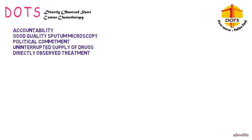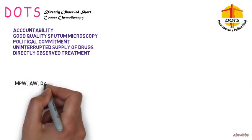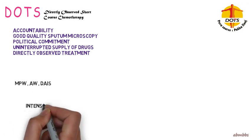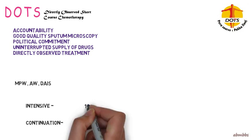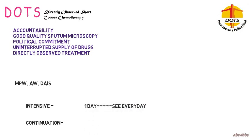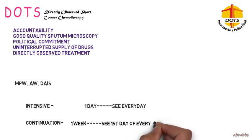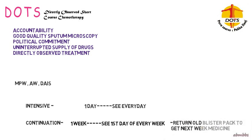Under DOTS, care is given by DOTS agents, who are mostly multipurpose workers and ANM workers. The treatment regimen is divided into two parts: the initial intensive phase and the later continuation phase. During the intensive phase, patients are given one blister pack of medicine every day, which they take in front of the DOTS agent — each blister pack contains only one day's medicine. However, in the continuation phase, the patient is given a blister pack containing one week's medication at a time. The patient takes the first day's medication immediately in front of the DOTS agent, and only on return of the empty blister is a new blister issued the following week. So in the intensive phase the patient comes every day, while in the continuation phase he meets the DOTS agent once a week.